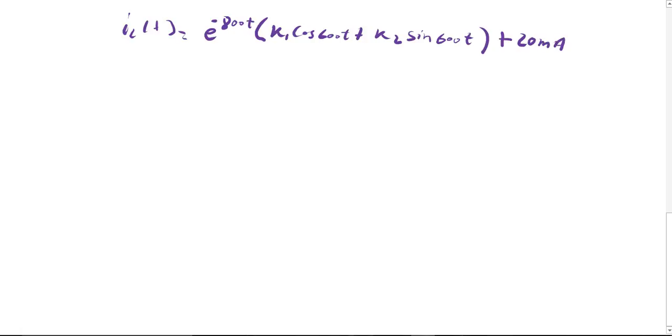Now we're going to solve for k1 and k2. The first thing we use is initial conditions, IL(0), which gives you 100 mA equals k1 plus 20 mA because when you put in 0 for t, this becomes 1 and this becomes 0. So you have k1 plus 20 mA. This gives value for k1 to be 80 mA.